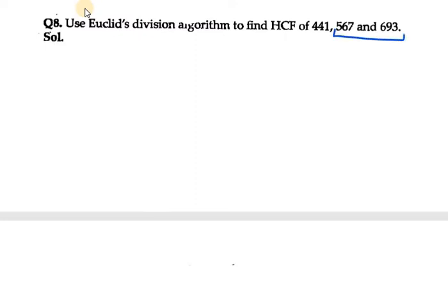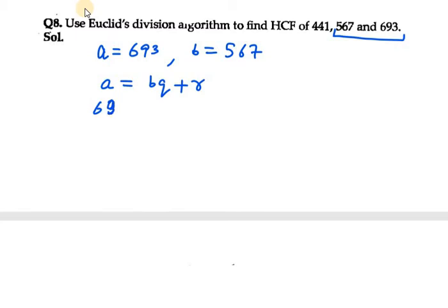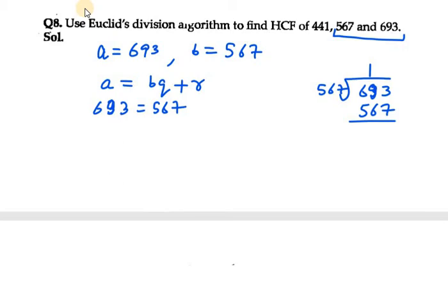I would be taking 567 and 693. So A is the bigger one, that is 693, and B is 567. We need to use the formula A equals BQ plus R, that is Euclid's Division Lemma. So 693 divided by 567 — the quotient will be 1 only, because 567 into 1 gives us 567, and 693 minus 567 is 126. So quotient is 1, remainder is 126.